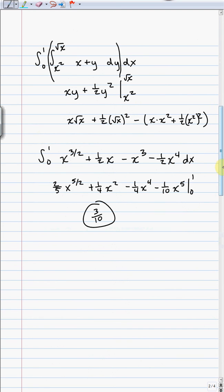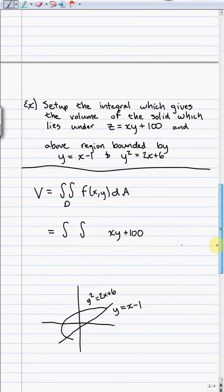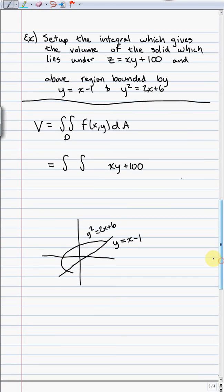Alright. So let's look at another example. Again, this is just for setup purposes here. So this time we're just going to set up the integral, which gives the volume of the solid, which lies under z is equal to xy plus 100, and above the region bounded by y is equal to x minus 1, and y squared is equal to 2x plus 6.